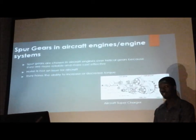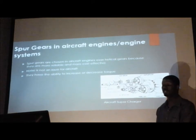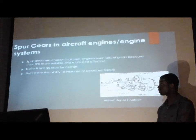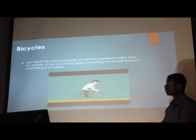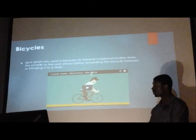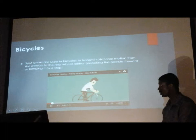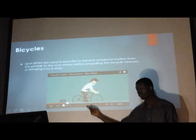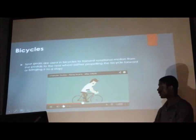We use spur gears in aircraft engines because they are more reliable than helical gears and they are also more cost effective. In bicycles, we have a simple gear system that transfers rotational motion from the pedals to the rear wheel, allowing the bike to either go forward or stop.